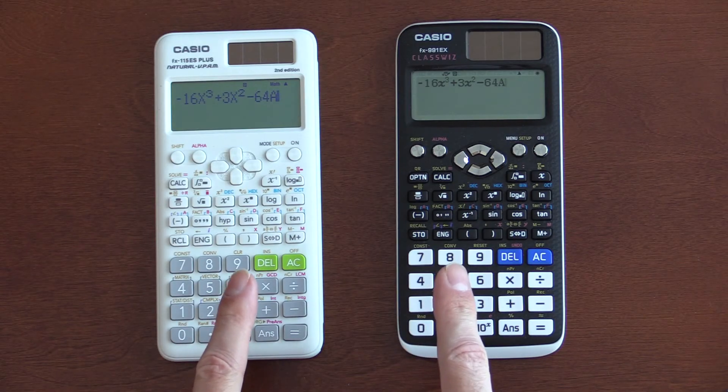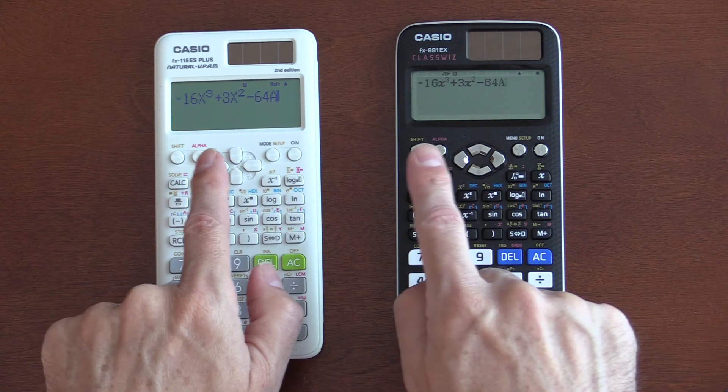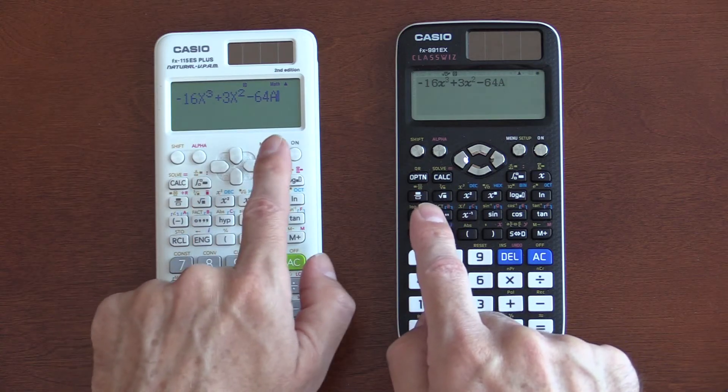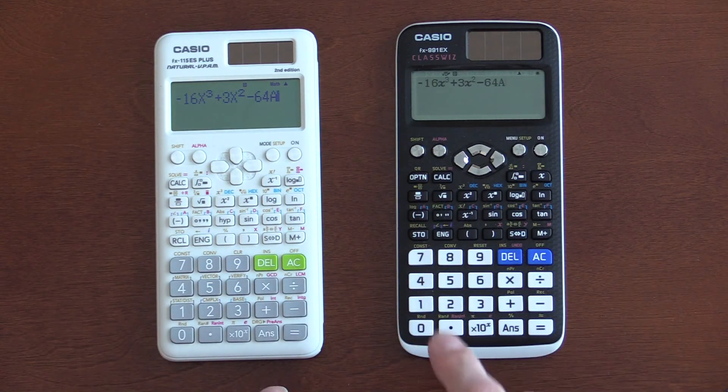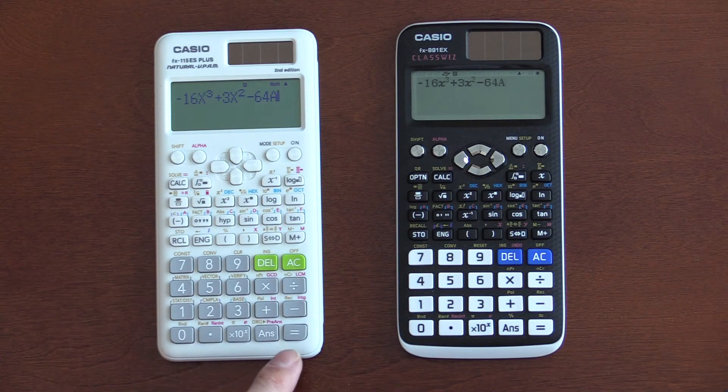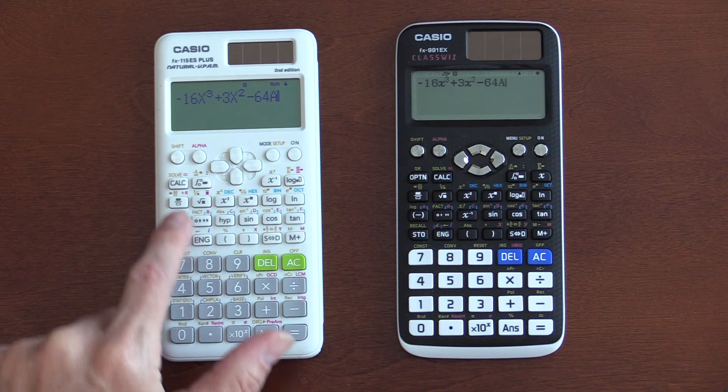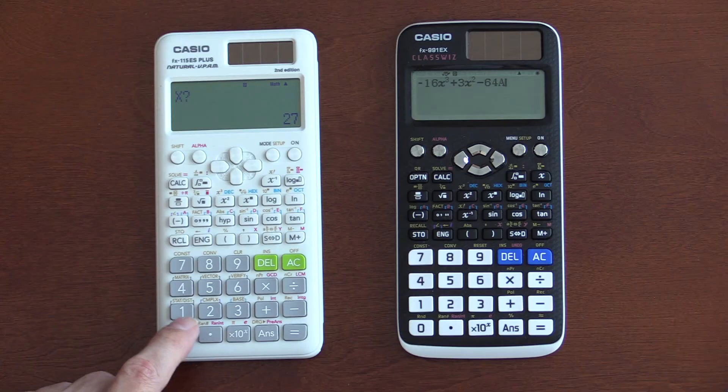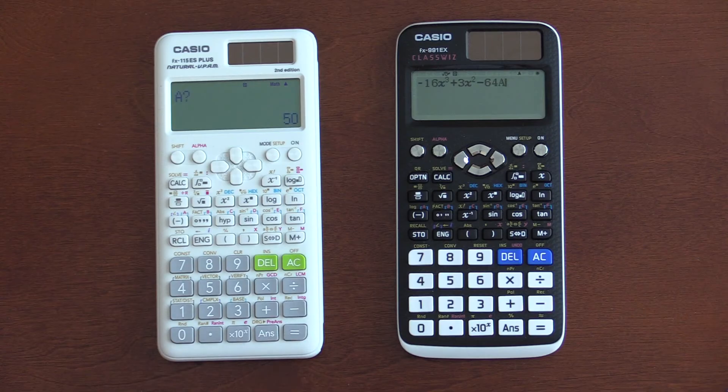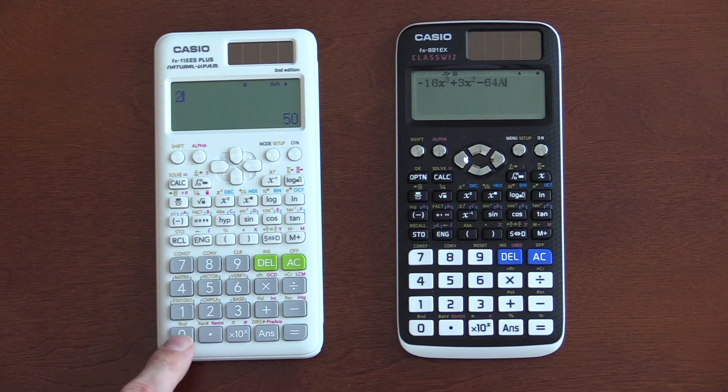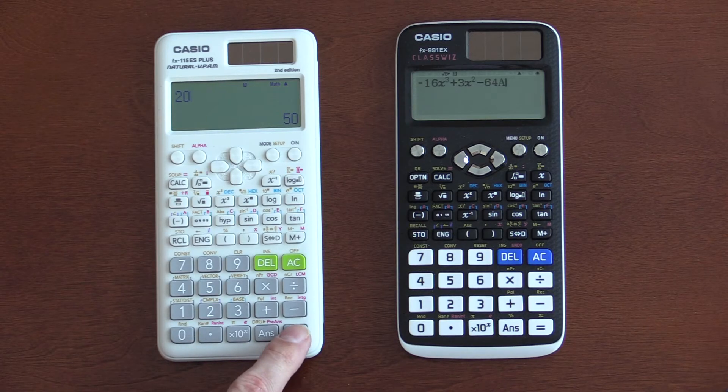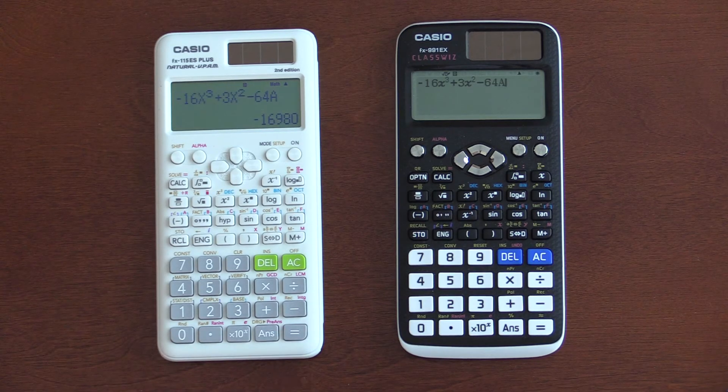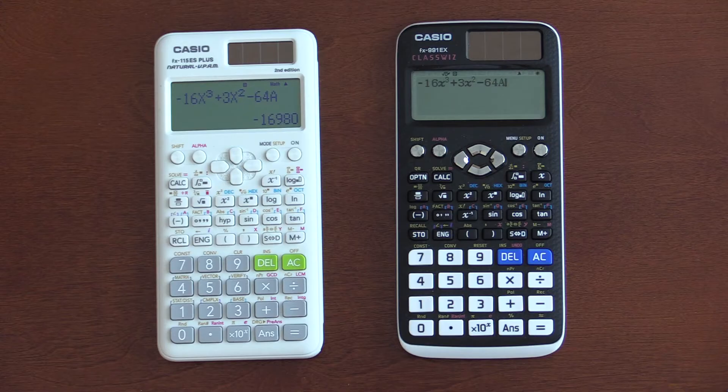For this next example, let's look at an expression with two different variables. So, we have an x and we have an a in each of these. On the ES, if you want to calculate, hit calc. And, let's say x was 10 and a was 20. So, I type 10 equal 20 equal and then I get my answer. I like that. That feels very intuitive to me.